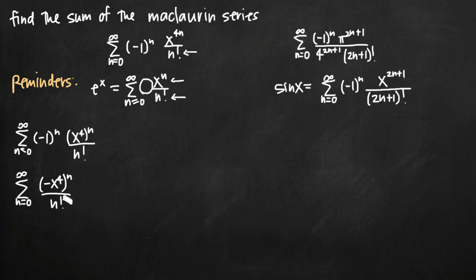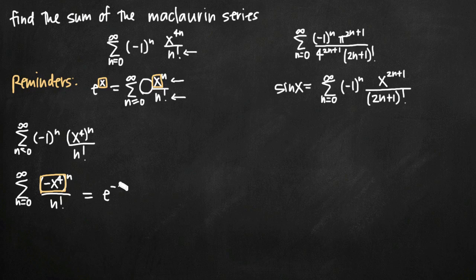Now we can see that our series has the exact same format as the well-known series, except that where the well-known series has x, ours has negative x to the fourth. Everything else is identical. This allows us to replace x in the sum with negative x to the fourth. So the sum of this series is e to the negative x to the fourth — we just replaced x with negative x to the fourth. That is the sum of the Maclaurin series we were given.